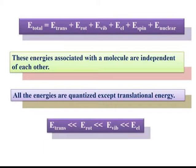E_translational is much lower compared to E_rotational, which is lower than E_vibrational, which is much lower than E_electronic. This shows that the electronic energy level has the highest energy, followed by vibrational energy level, then rotational energy level, and the least energy is possessed by translational energy.